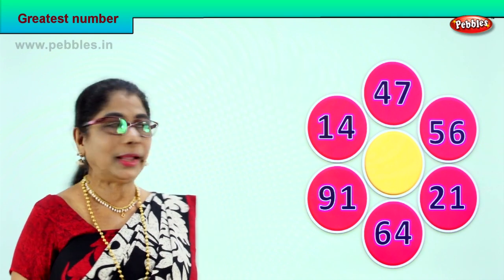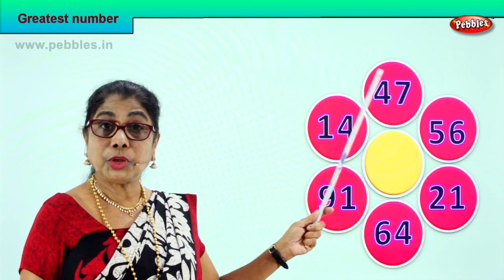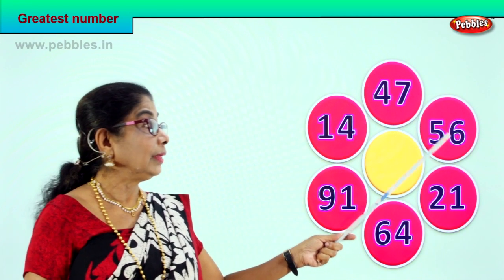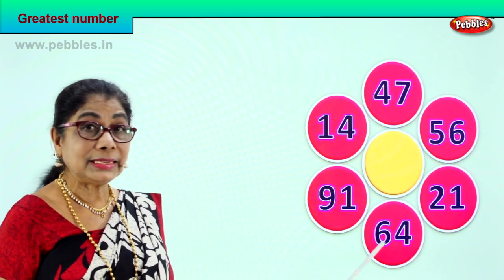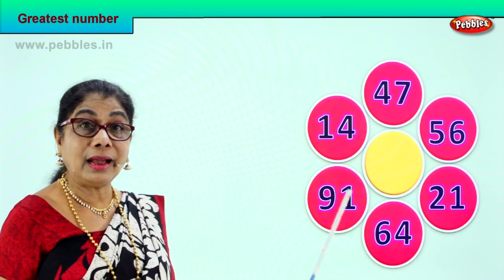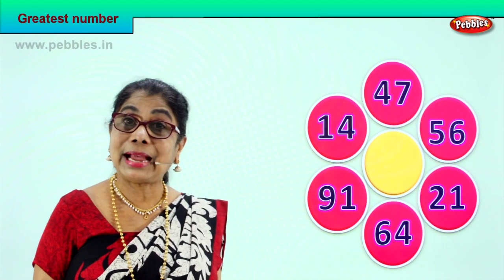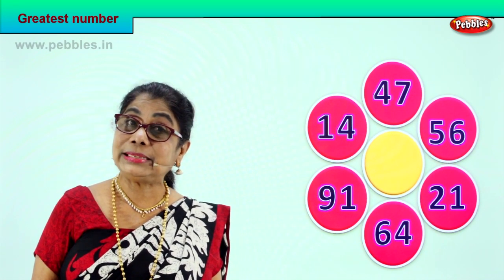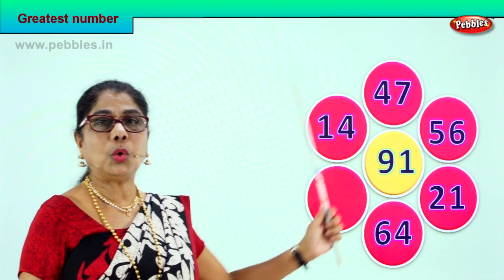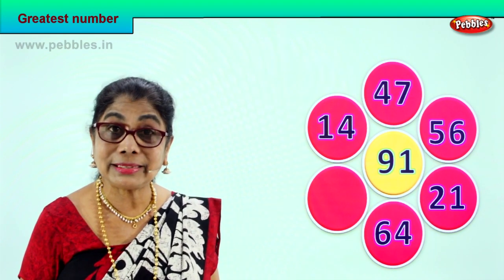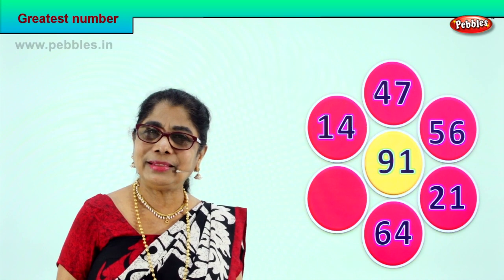Look at the numbers you have. 14 has 1 ten and 4 ones. 47 has 4 tens and 7 ones. 56 has 5 tens. 21 has 2 tens. 64 has 6 tens. And 91 has 9 tens. So among all the numbers, the number with the highest number of tens in the tens place is 91 — 9 tens and 1 one. Among all the numbers, 91 has the highest number of tens in the tens place. Did you enjoy doing it? Isn't it very interesting identifying the greatest number?